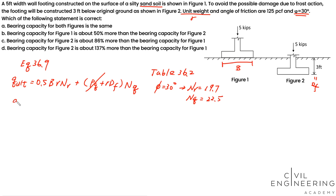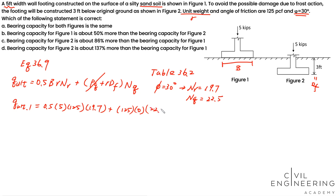The bearing capacity for figure one is: 0.5 × B (5 feet) × γ (125 pcf) × Nγ (19.7), plus the surcharge term which equals zero since Df is zero. This gives 6,156.25 psf as the bearing capacity for figure one.